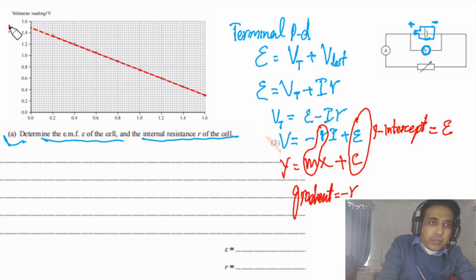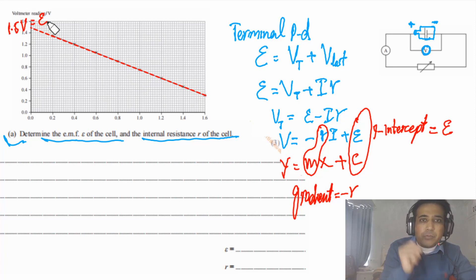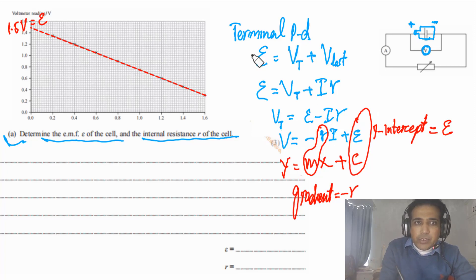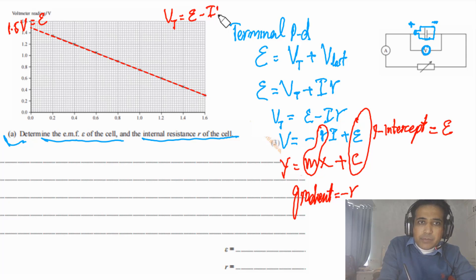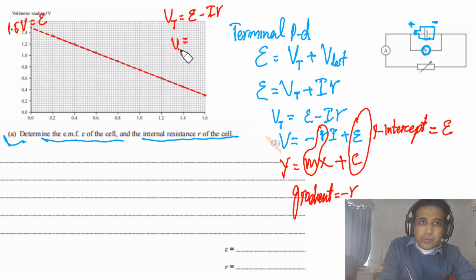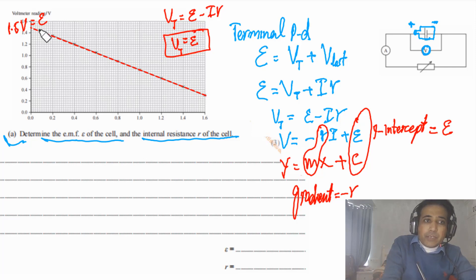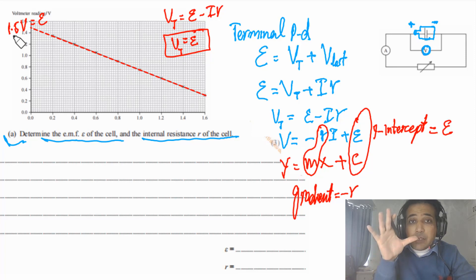So EMF = 1.5 volts. This is a very important point: when current equals zero, terminal potential difference equals EMF of the cell. Sometimes you understand equations but not their physical meaning — physically, when no current flows, there is no voltage drop across the internal resistance, so terminal PD equals EMF. In this case, EMF = 1.5 volts.